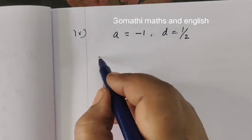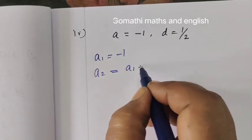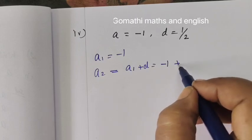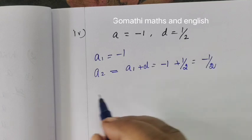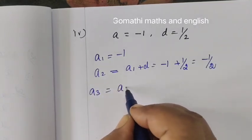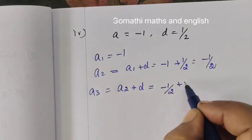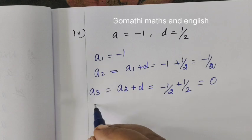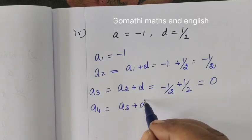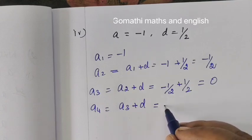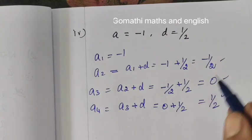Now subdivision 4. What is a1 equal to minus 1? Then a2 equals a1 plus d, which is minus 1 plus 1/2 equals minus 1/2. Then a3 equals a2 plus d, which is minus 1/2 plus 1/2 equals 0. Then a4 equals a3 plus d, which is 0 plus 1/2 equals 1/2. This is the answer for this.